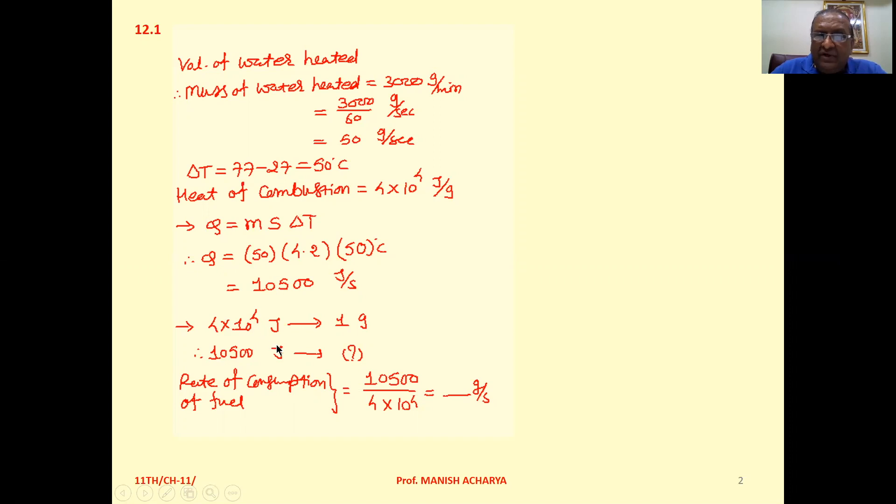4 into 10 raised to 4 joules amount of heat required for 1 gram water. Then 10,500 joules will be heating how much amount of water. So rate of consumption of fuel that is 10,500 upon 4 into 10 raised to 4 grams per second.